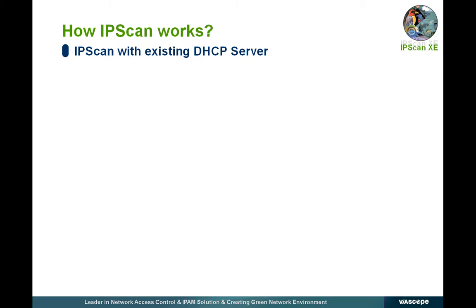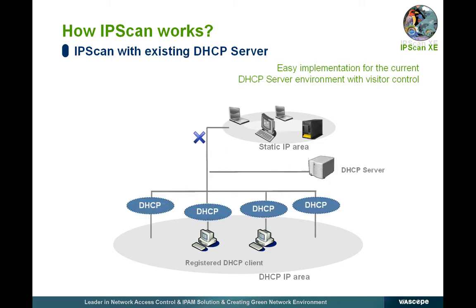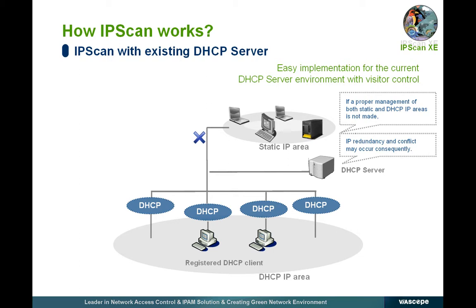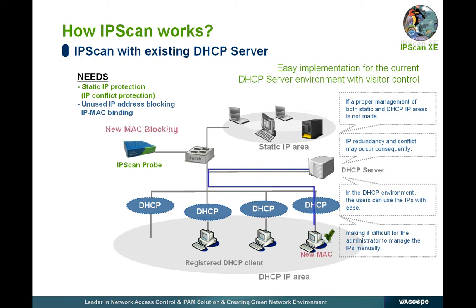IP scan supports both conventional DHCP environments and static IP environments. Currently, the static IP is used for servers or major network equipment. However, only the IP and MAC addresses assigned by the DHCP server are under control, and integrated management of static IP network devices is not implemented properly. If proper management of both static and DHCP IP areas is not made, IP redundancy and conflict may occur. In the DHCP environment, users can use IPs with ease, making it difficult for administrators to manage IPs manually. Unauthorized users can access the corporate network and be assigned IPs with no problem — a fatal vulnerability in network security.